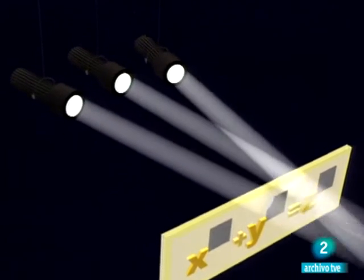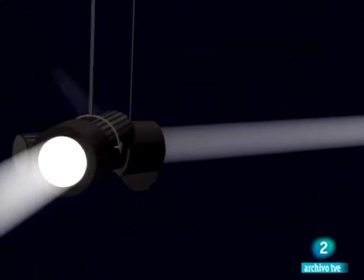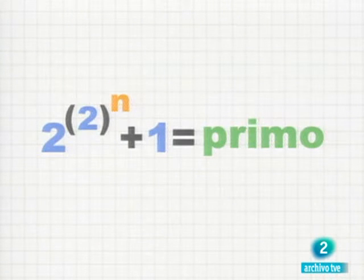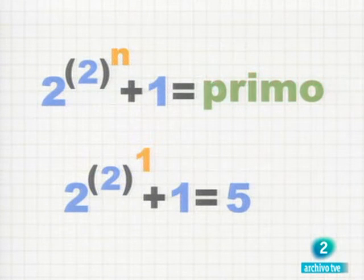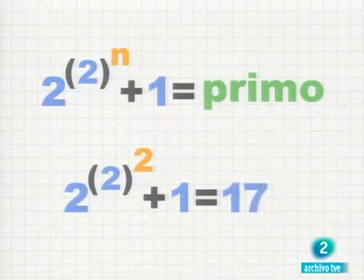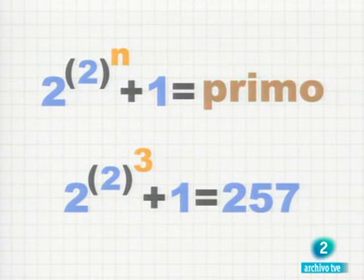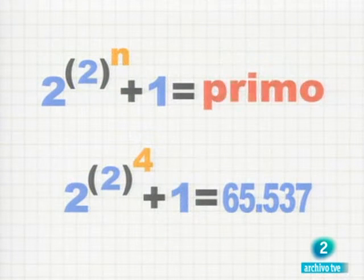Pero de alguna forma se vengó de Fermat. Este, en otras de sus mágicas intuiciones, afirmó que todos los números de la forma 2 elevado a 2 elevado a n más 1 son números primos. En efecto, si n es igual a 1, 2 elevado a 2 más 1 igual a 5 es primo. Lo mismo ocurre si n es igual a 2, si n es igual a 3, si n es igual a 4, y aquí se quedó Fermat y concluyó que funcionaría siempre.